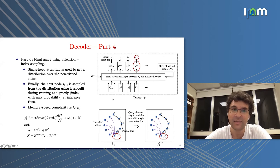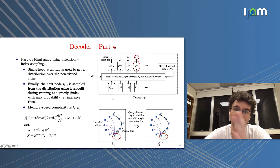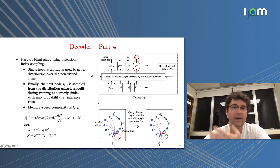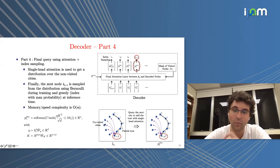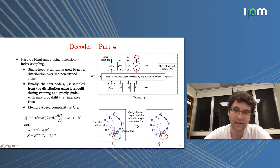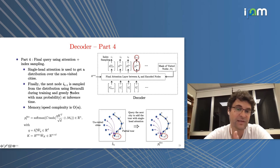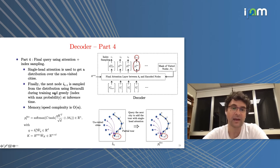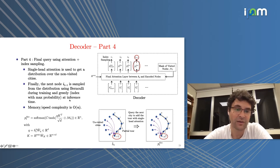We perform this query-then-attention procedure L times, the number of decoder layers. The final query uses single-head attention since we want a single probability over the next city. During training we sample the next city using simple multinomial sampling, and during inference we can use greedy decoding.